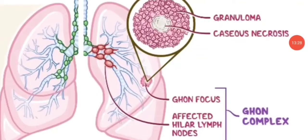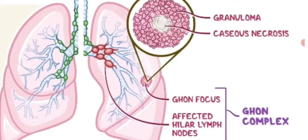You can see the cheese-like structures here — that is why it is called caseous necrosis. So, Ghon focus = granuloma + caseous necrosis; and Ghon complex = Ghon focus + affected lymph node. As caseous necrosis progresses, it spreads to the upper lung, and the condition becomes severe — potentially causing death.